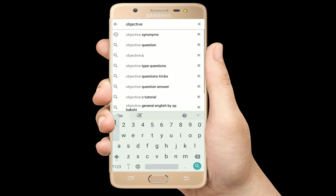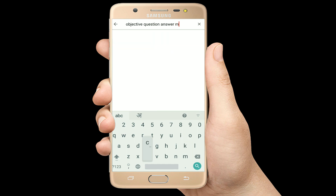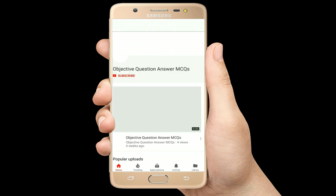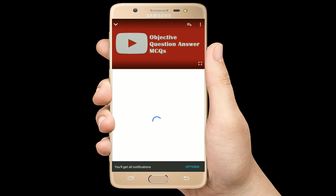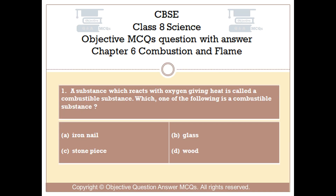Hello, welcome to Objective Question Answer MCQs YouTube channel. With positive vibes, let's start this video. Question number 1: A substance which reacts with oxygen giving heat is called a combustible substance. Which one of the following is a combustible substance?